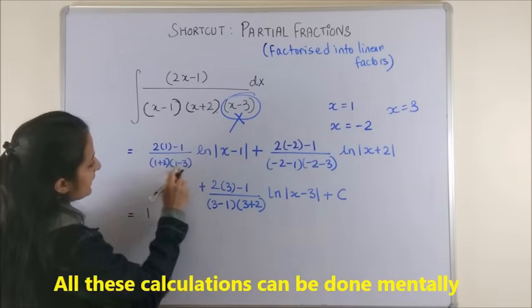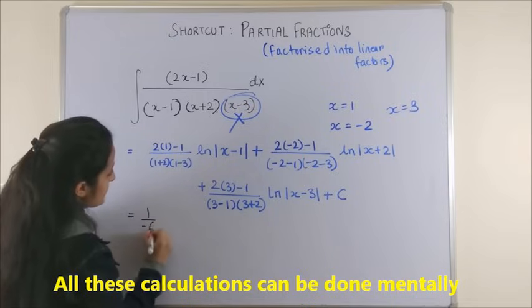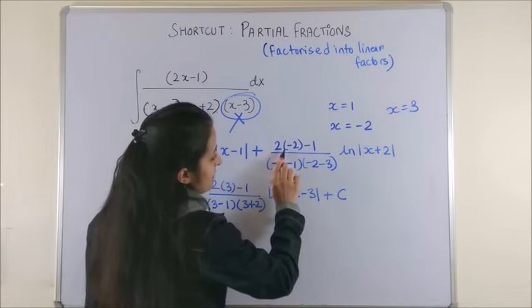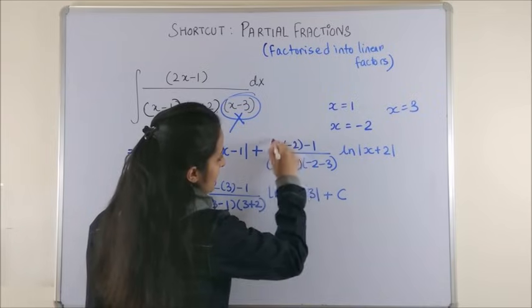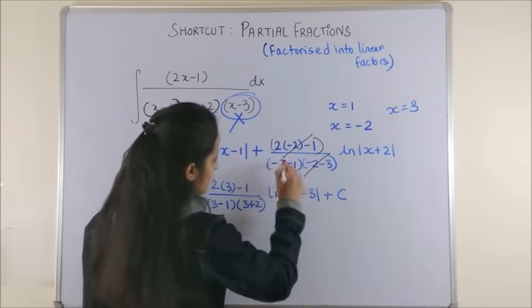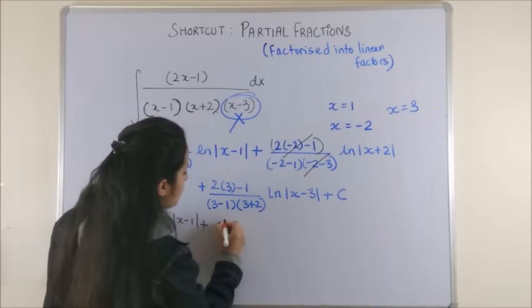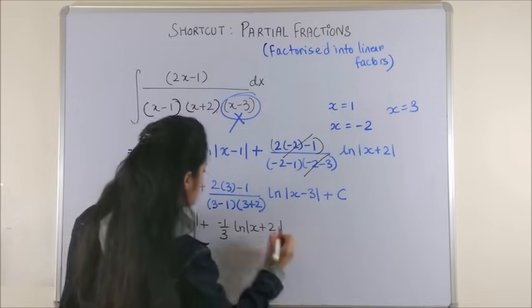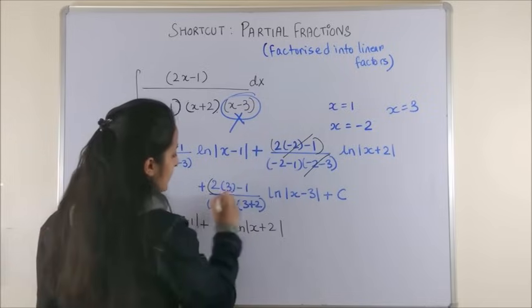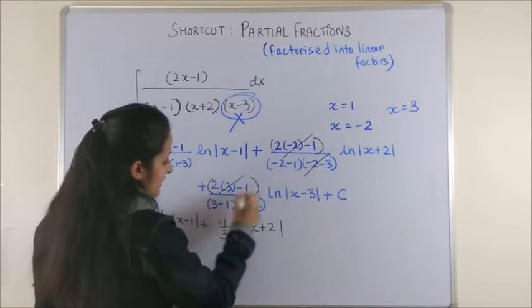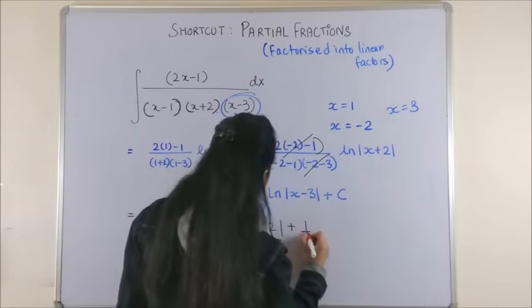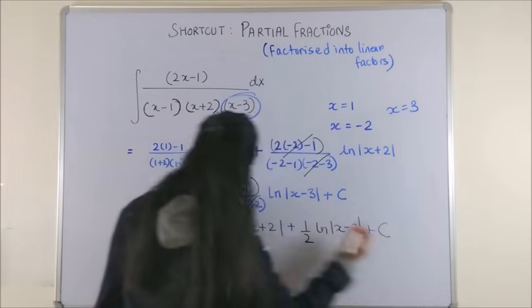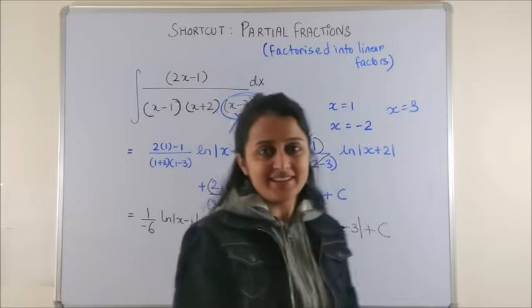Now all you need to do is simplify. So this gives us one over three into minus two, that's minus six, log mod x minus one. Plus, this would be minus four minus one, that's minus five, which can get cancelled with this one and you're left with minus one by three log mod x plus two. And this one again, six minus one is five which gets cancelled, plus half log mod x minus three plus c. This is the desired answer.